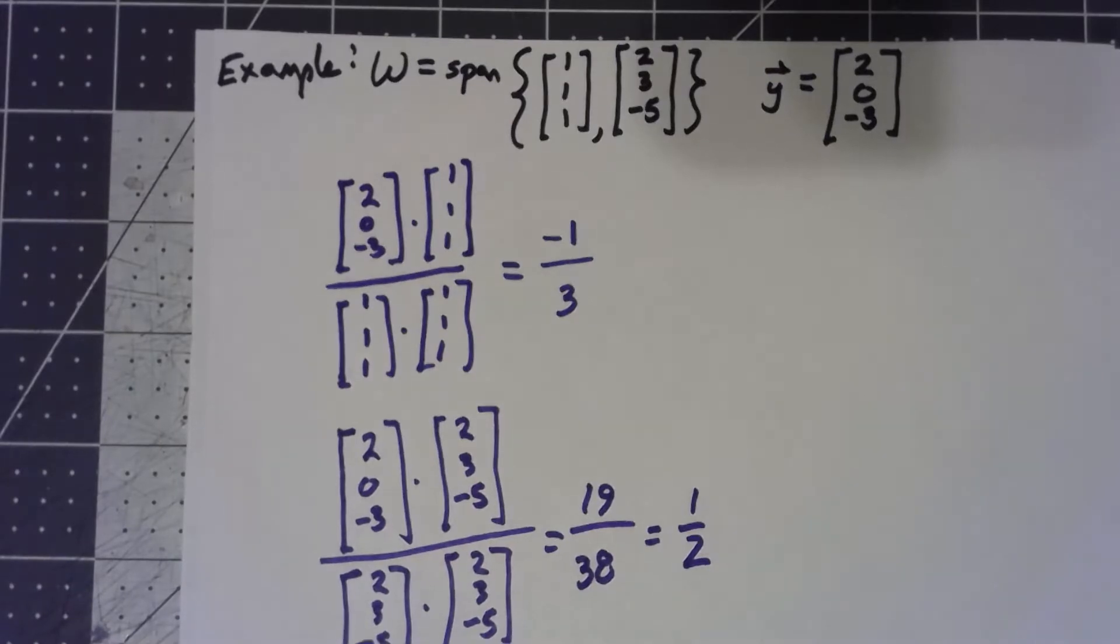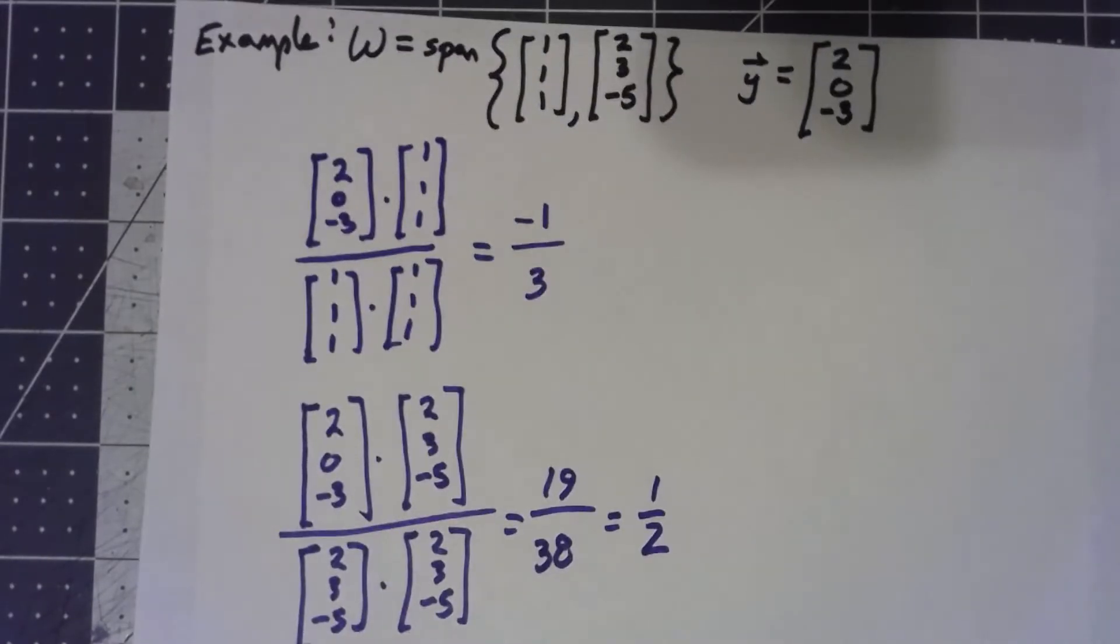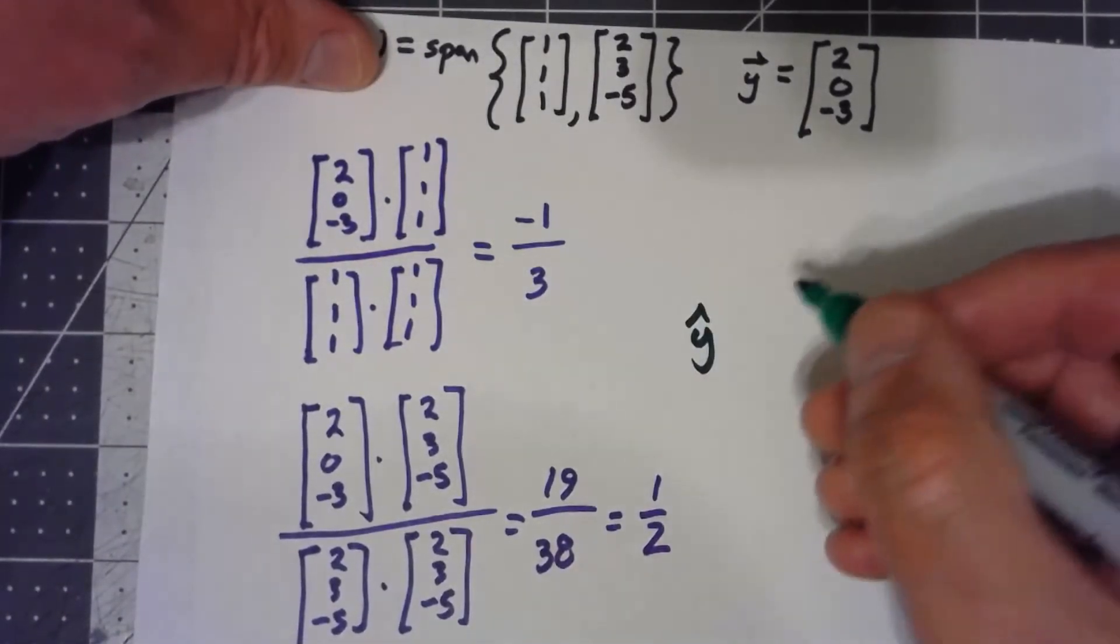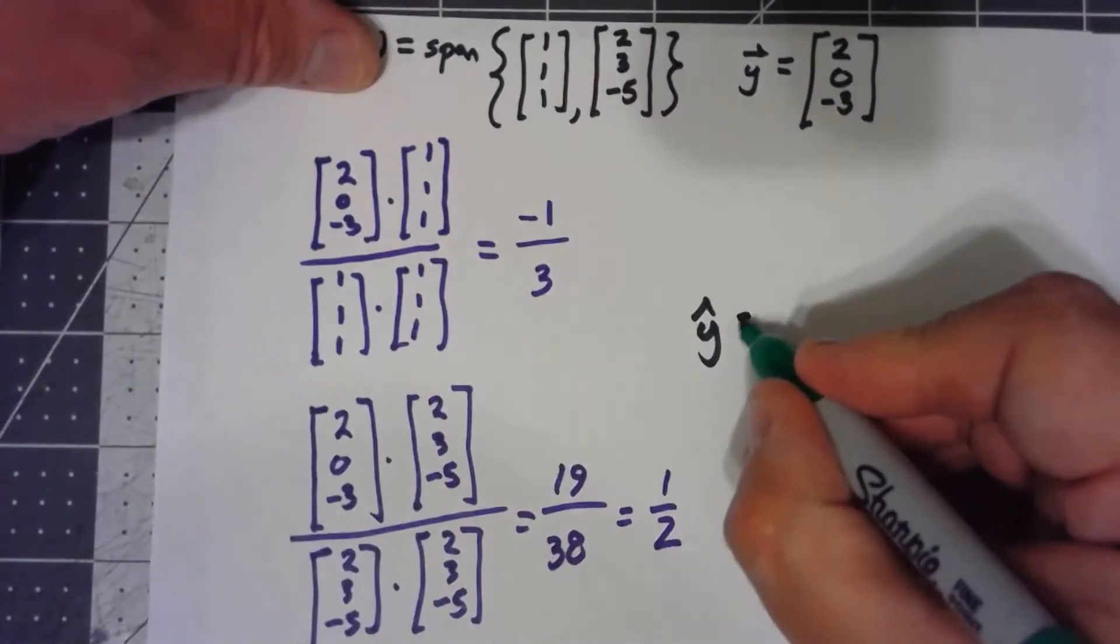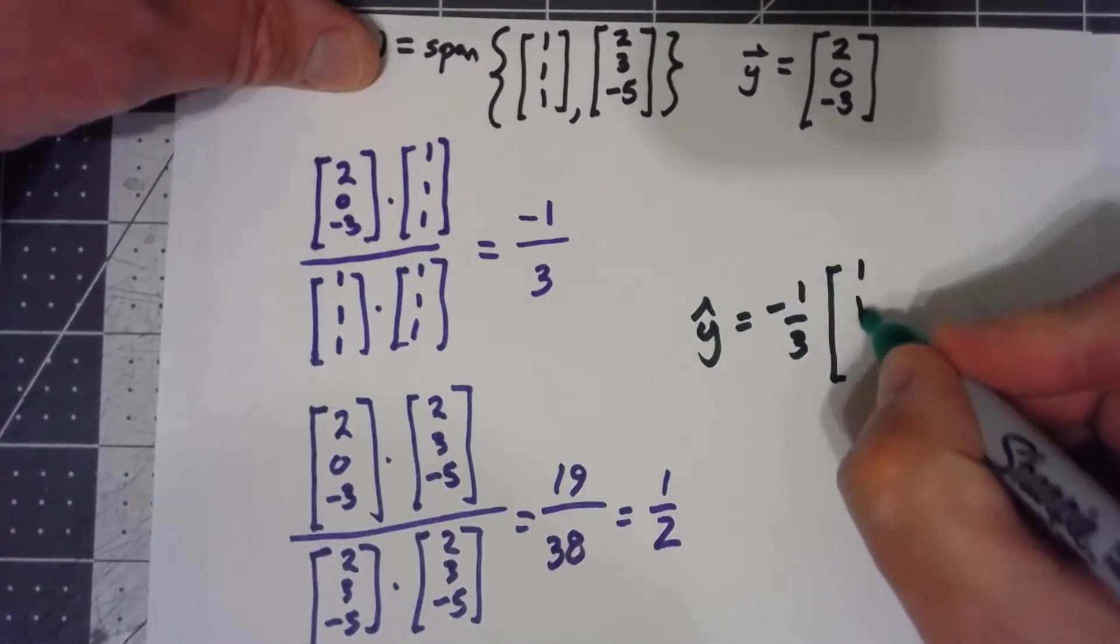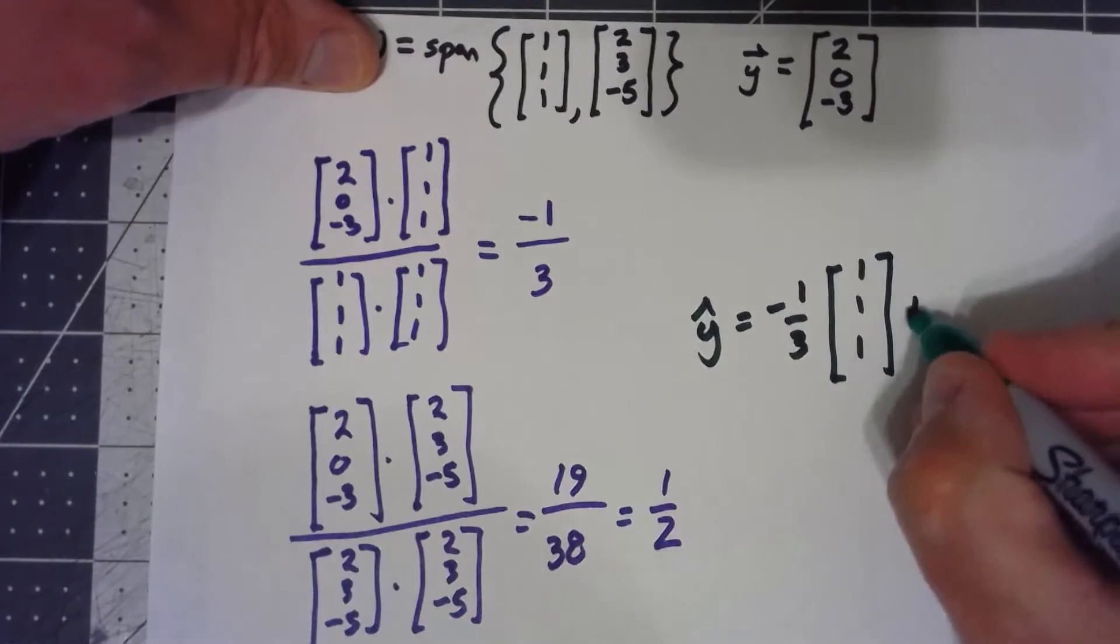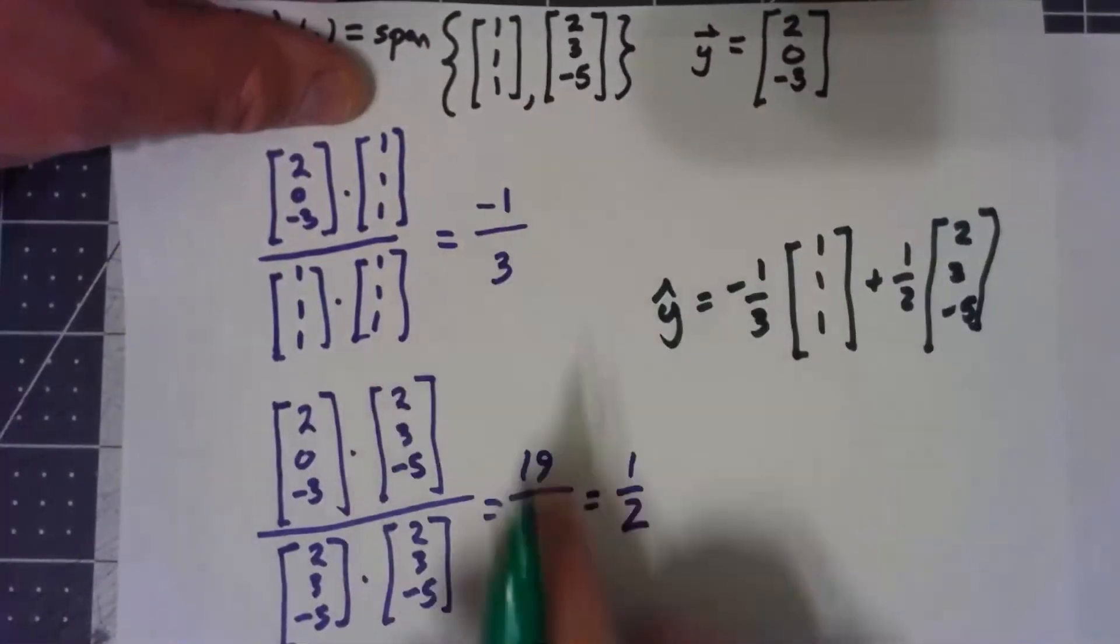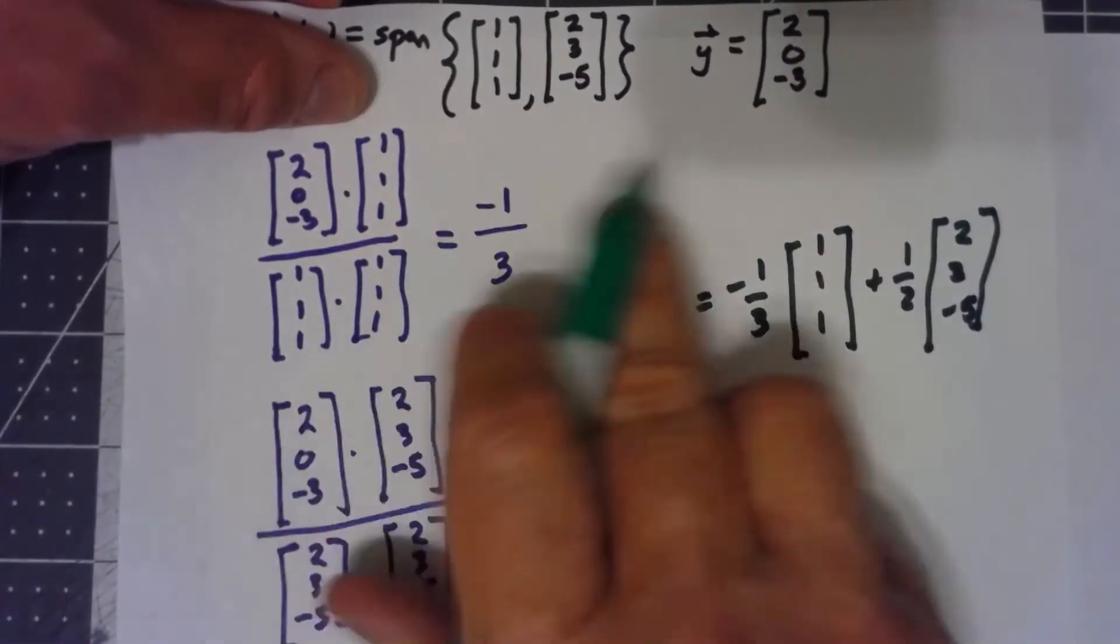So with this, what we have, my y-hat, the part of y that's in w, that's in that span, is -1/3 times (1, 1, 1) plus 1/2 times the (2, 3, -5). These are the coefficients of those basis vectors.